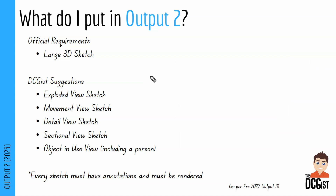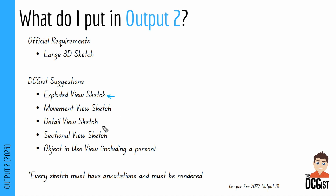After looking at the official requirements, these are the things I would suggest you put into output 2. You're going to need your large 3D sketch, as that's in the official requirements. Outside of that, to give the extra detail, I would suggest putting in some or all of these types of views: an exploded view sketch — a lot of the time that might be better done after you've done the SolidWorks, because you'll have an exploded view there — and a movement view, showing if there's a lid or something that rotates, using arrows to show movement graphically rather than just writing it down.